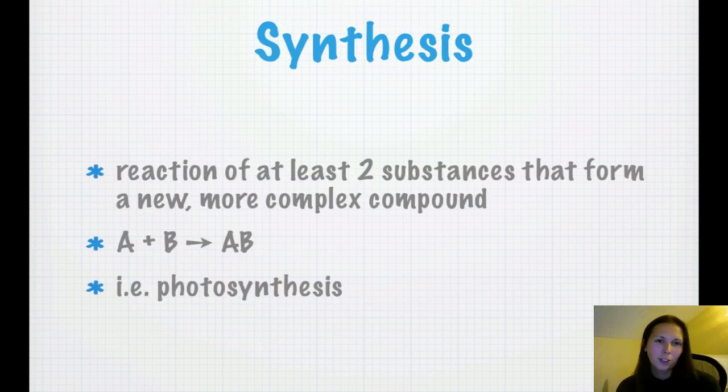A synthesis reaction is the reaction of at least two substances that form a new, more complex compound. So, you take A plus B and you end up with AB as a new thing. So, for example, photosynthesis takes carbon dioxide and light and water and makes sugar. So, that's something more complex than the original.